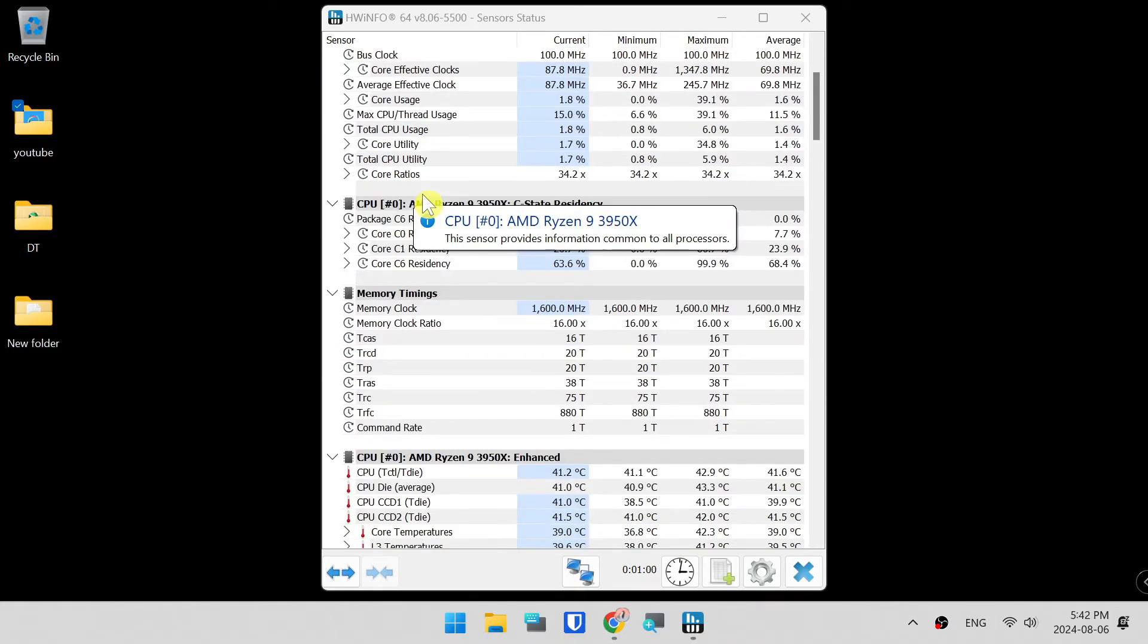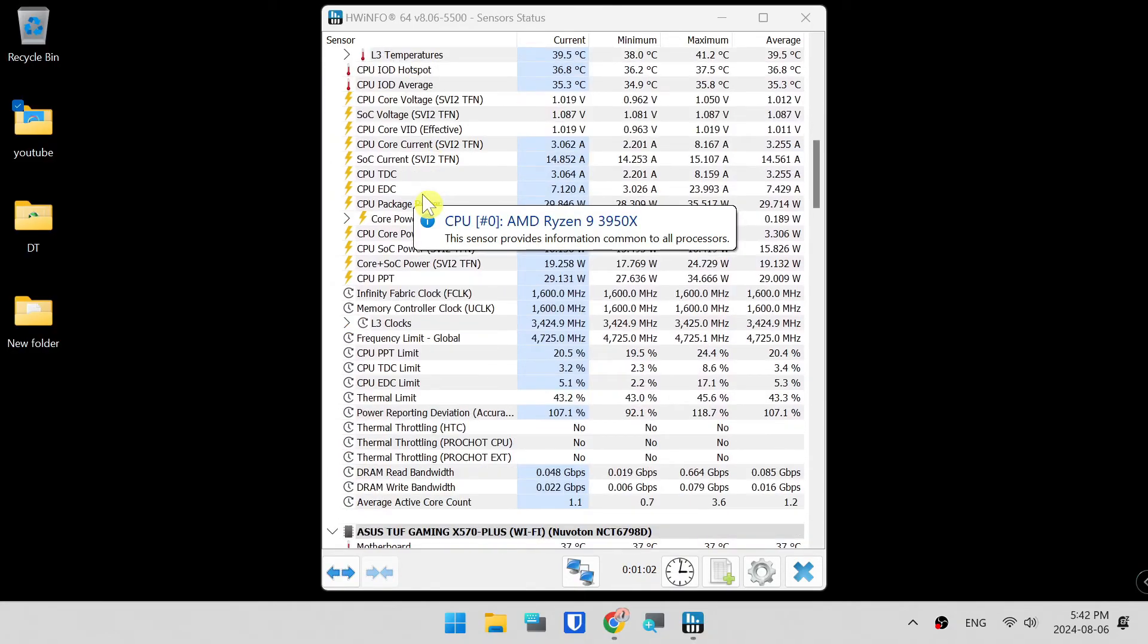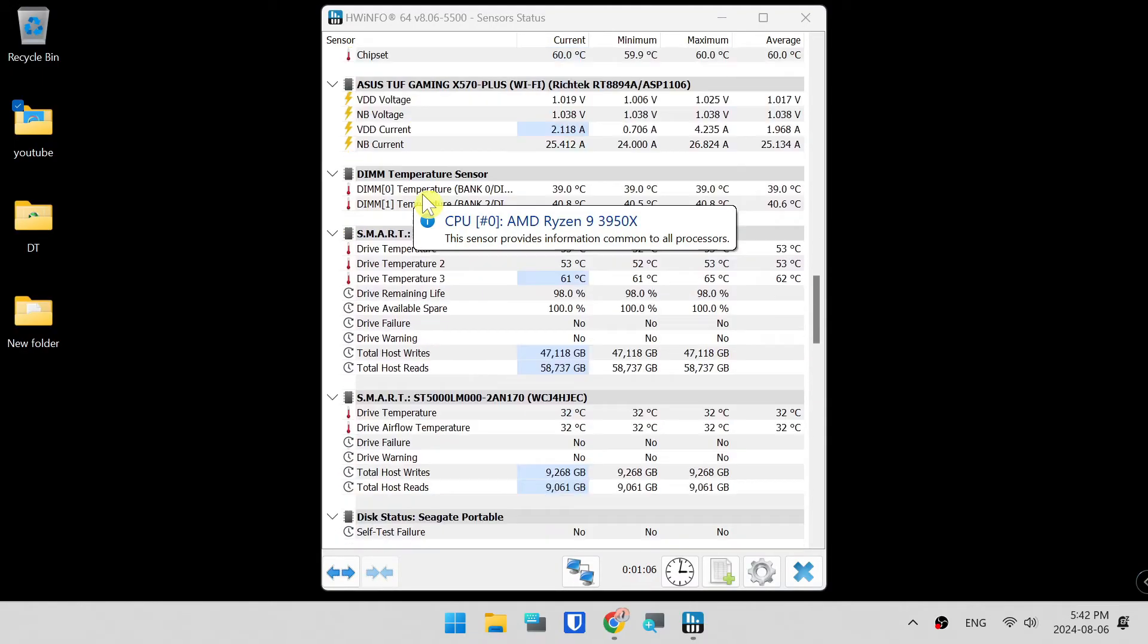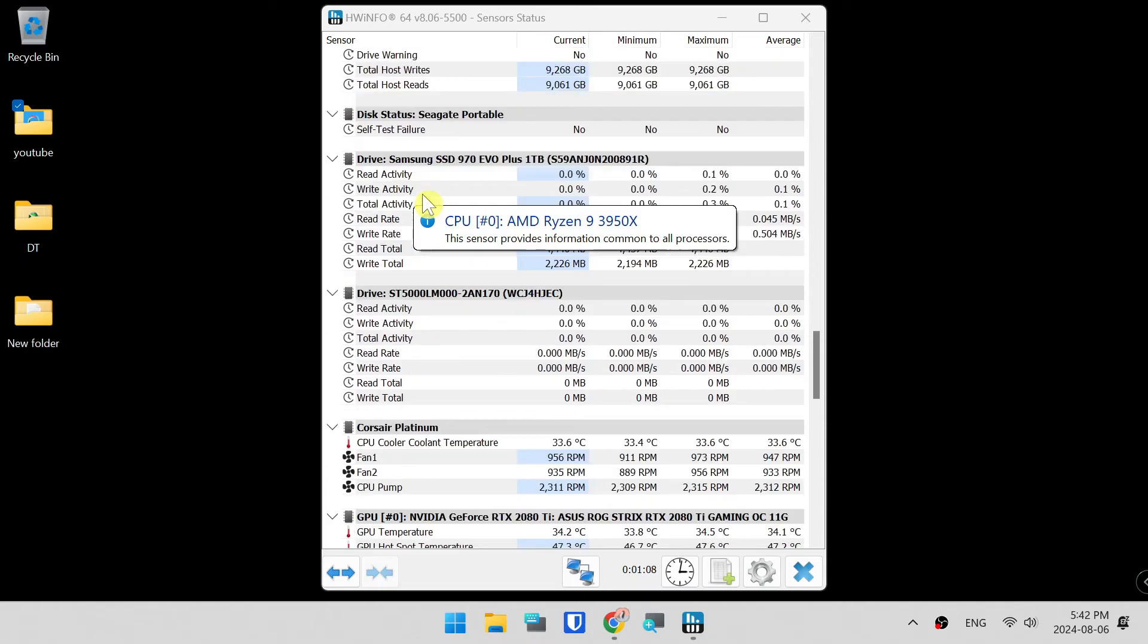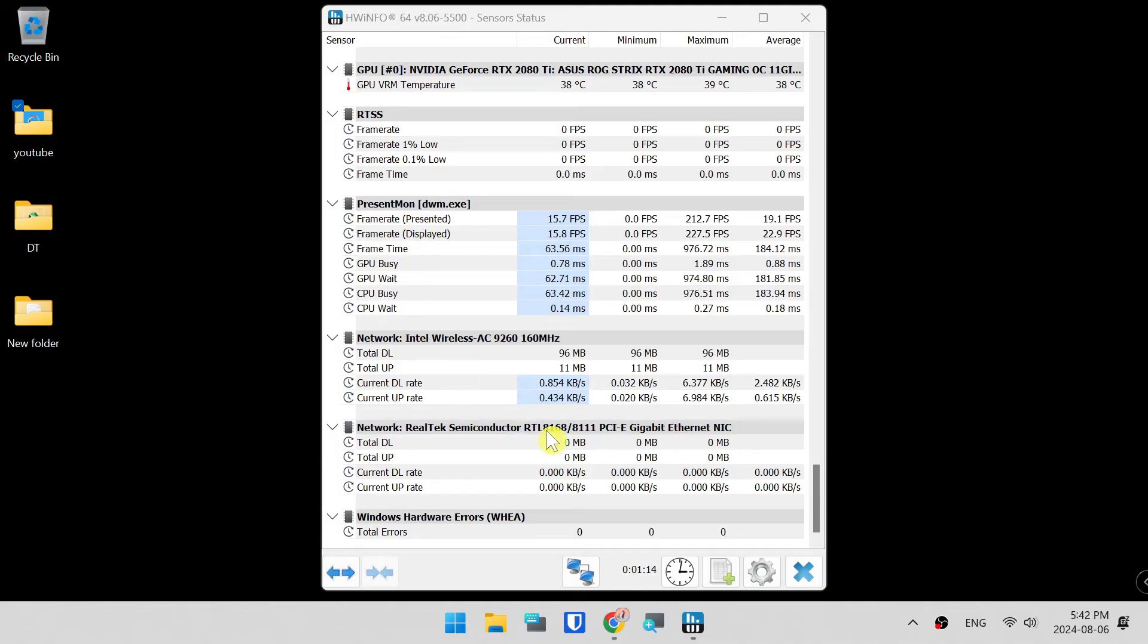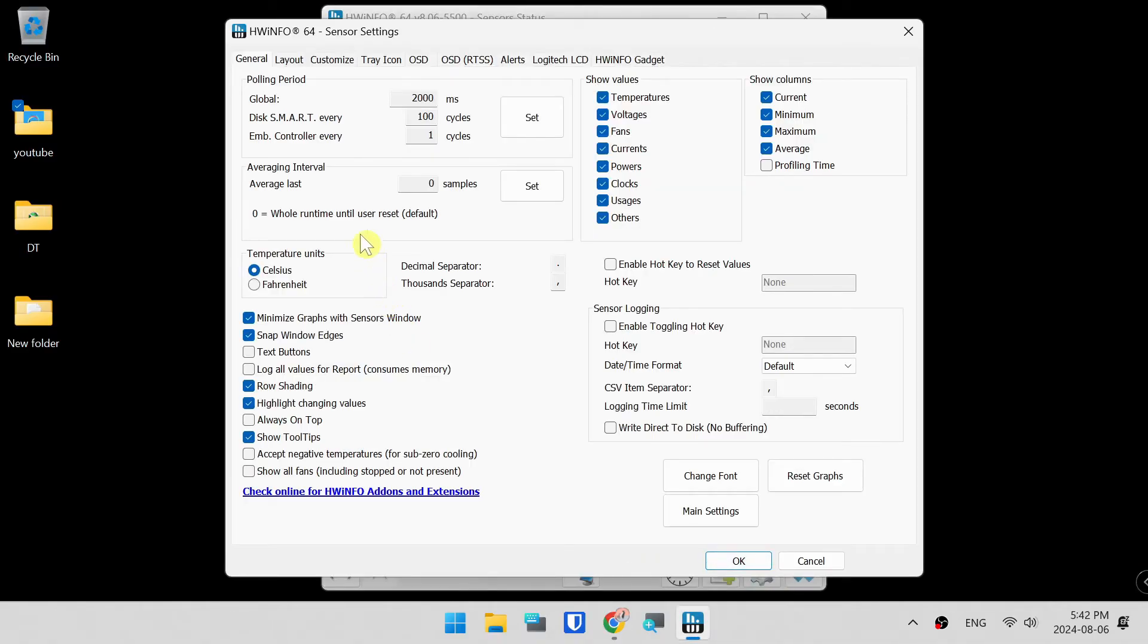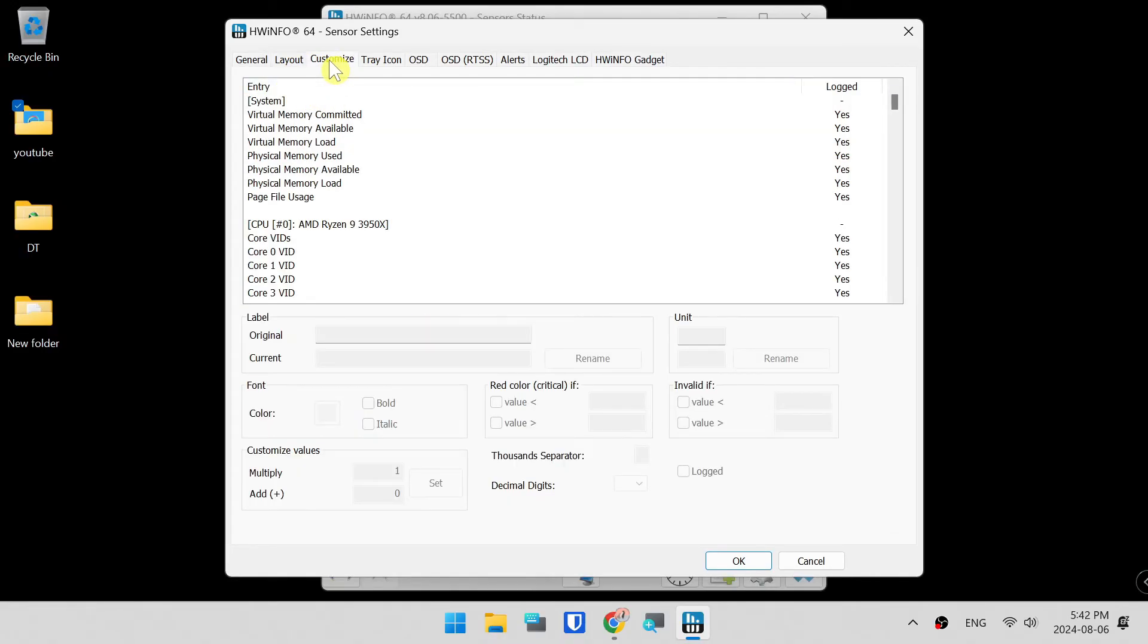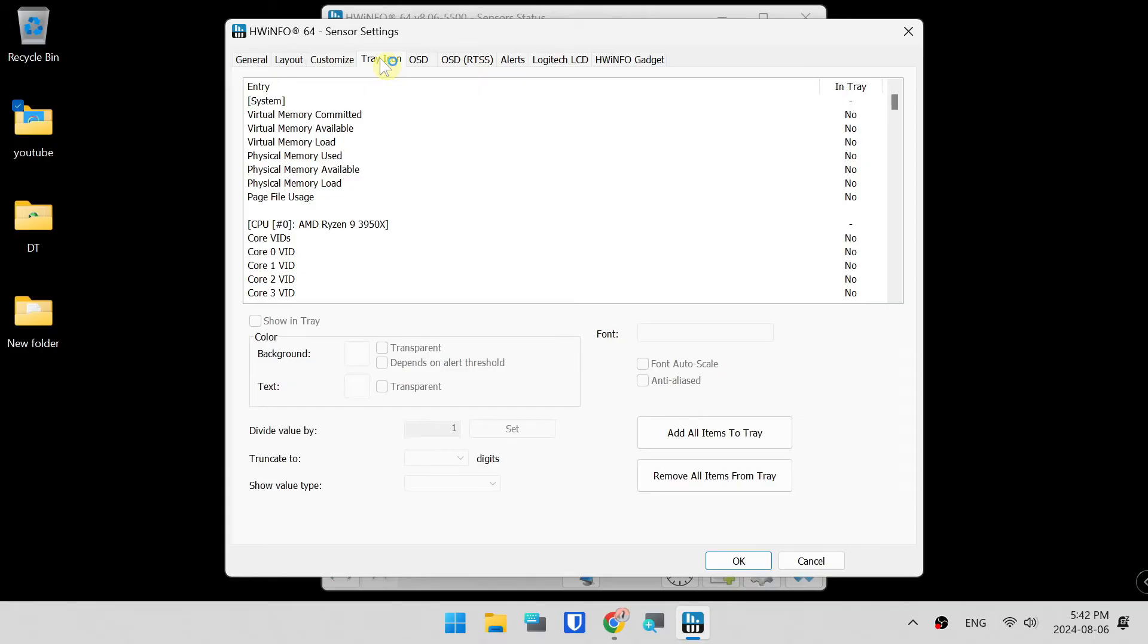System. Network. Option. General layout. Customize. Tray icon. OSD.